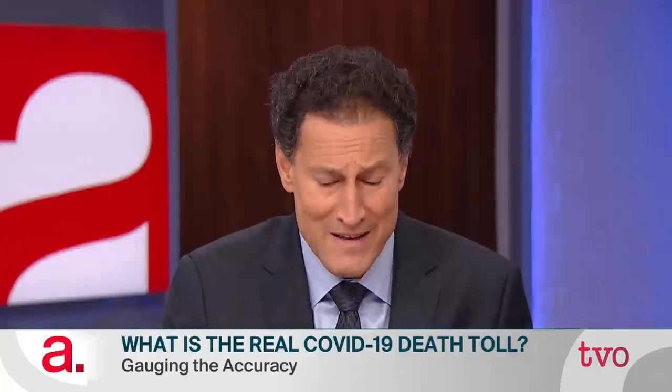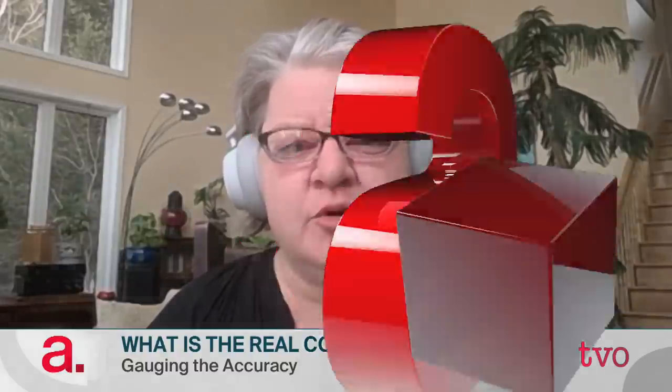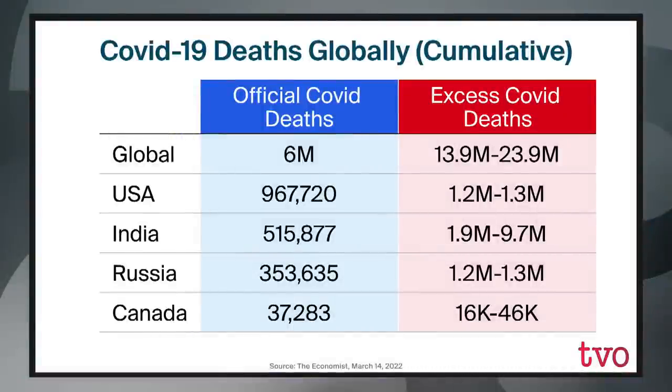Tara, you're the lead author on the Royal Society of Canada's report on mortality in Canada during this pandemic. Tell us, in your judgment, how Canada has fared. From the point of view of excess mortality, I'd like to point viewers to the range of numbers listed for excess mortality for Canada. You may have noticed that the lower number is actually lower than the number of reported deaths — 37,000 official COVID deaths, and only potentially between 16,000 and 46,000 for excess COVID deaths.